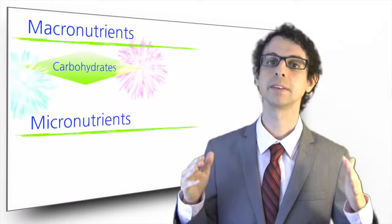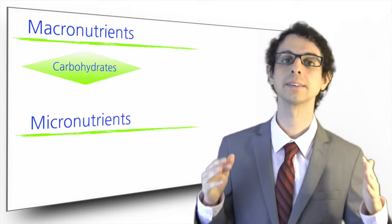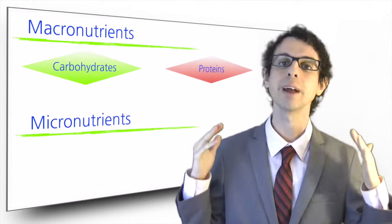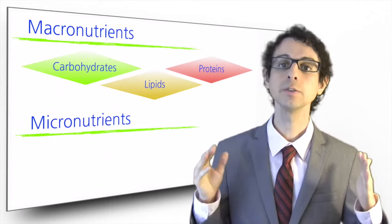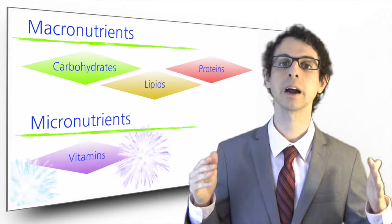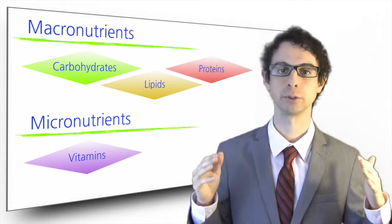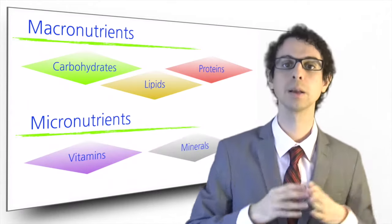Carbohydrates, lipids, and proteins are referred to as the macronutrients, because we need them in relatively large amounts. Conversely, vitamins and minerals are referred to as the micronutrients, because we need only small amounts of them.